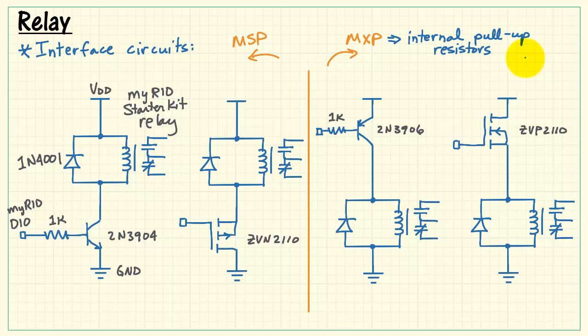Now, the difference between the two is based on the fact that the MXP connectors have internal pull-up resistors, while the MSP has internal pull-down resistors.